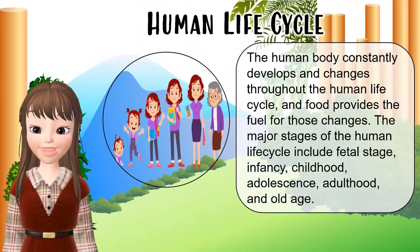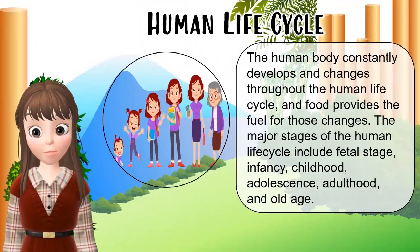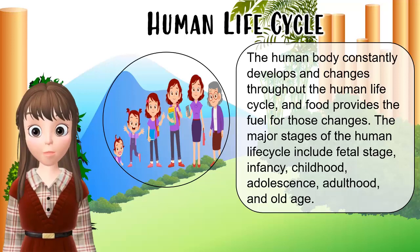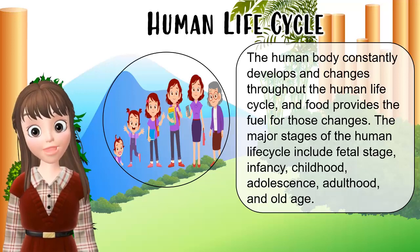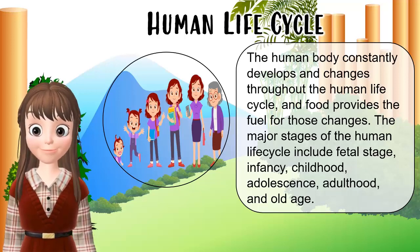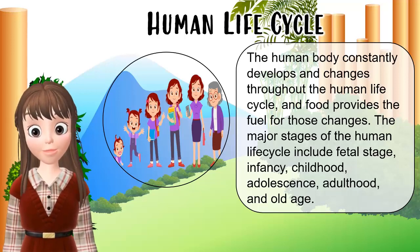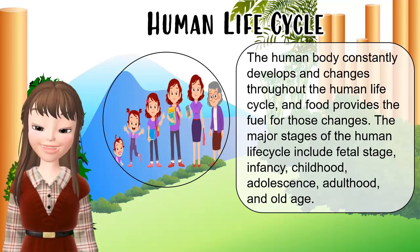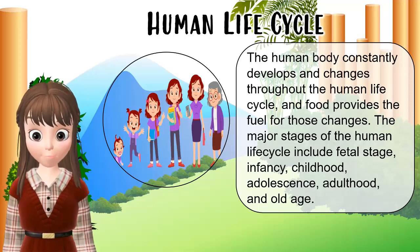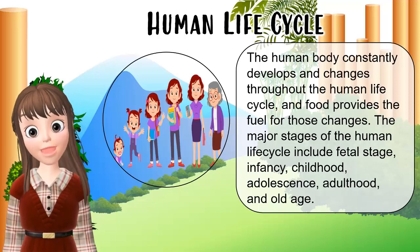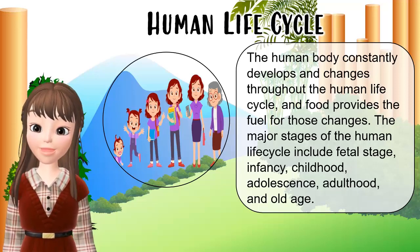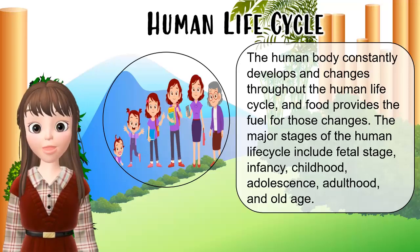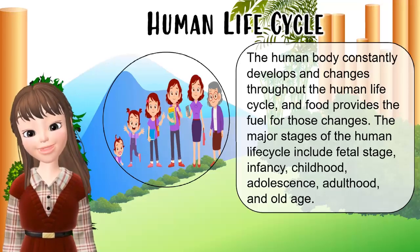The human body constantly develops and changes throughout the human life cycle, and food provides the fuel for those changes. The major stages of the human life cycle include fetal stage, infancy, childhood, adolescence, adulthood, and old age.